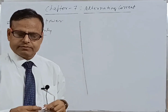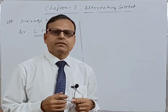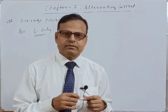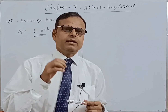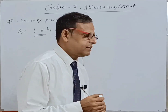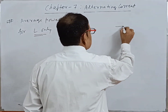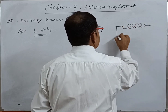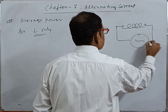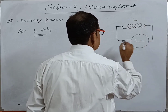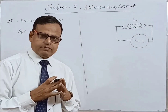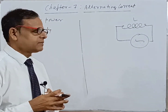Chapter 7: Alternating Current. In this chapter, I will derive the average power of an AC circuit when the inductor is the only circuit element. This is the inductor AC circuit, with L as the inductor. We have to find the average power.